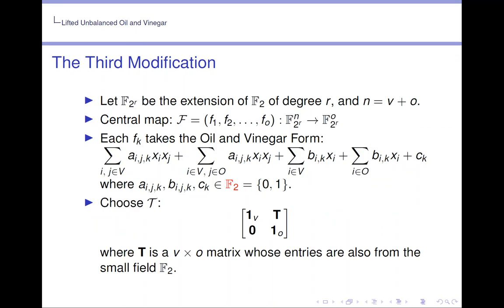So to be explicit, let F_{2^r} be the extension of F_2 of degree r, and n equals v plus o. The central map F still is in oil and vinegar form. But now each of the coefficients is going to be chosen in F_2, so either 0 or 1. Further, we choose that linear map T to be in the form where each of the entries are also from the small field F_2.